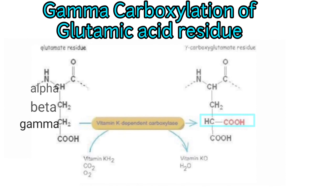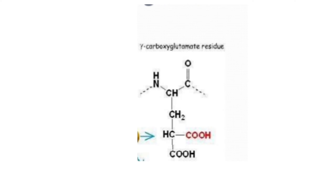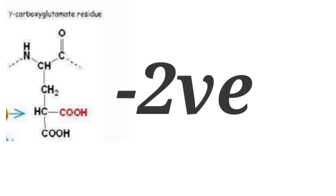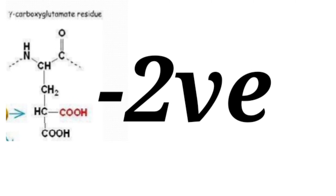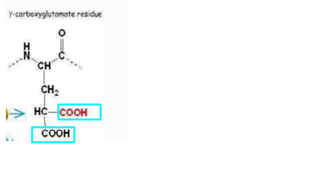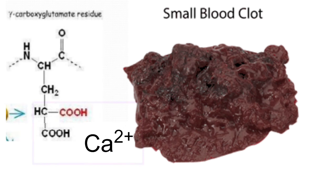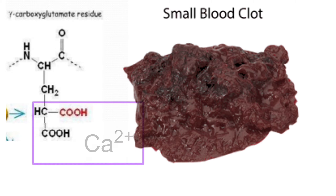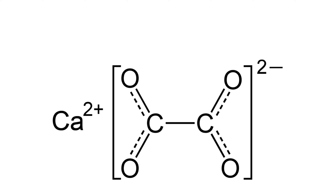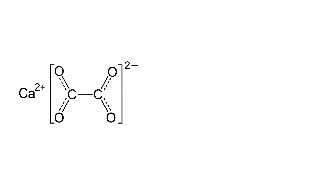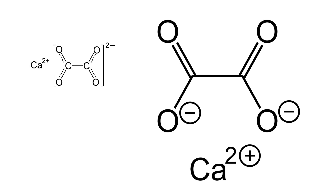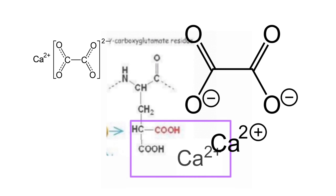If you observe carefully, gamma-carboxylated glutamate has two negative ions because of two carboxylic acid groups on the gamma carbon, which essentially combine with calcium to help the process of coagulation. You've definitely heard of calcium oxalate salts — the combination of oxalic acid and calcium forming calcium oxalate salts. The above reaction is similar to that.